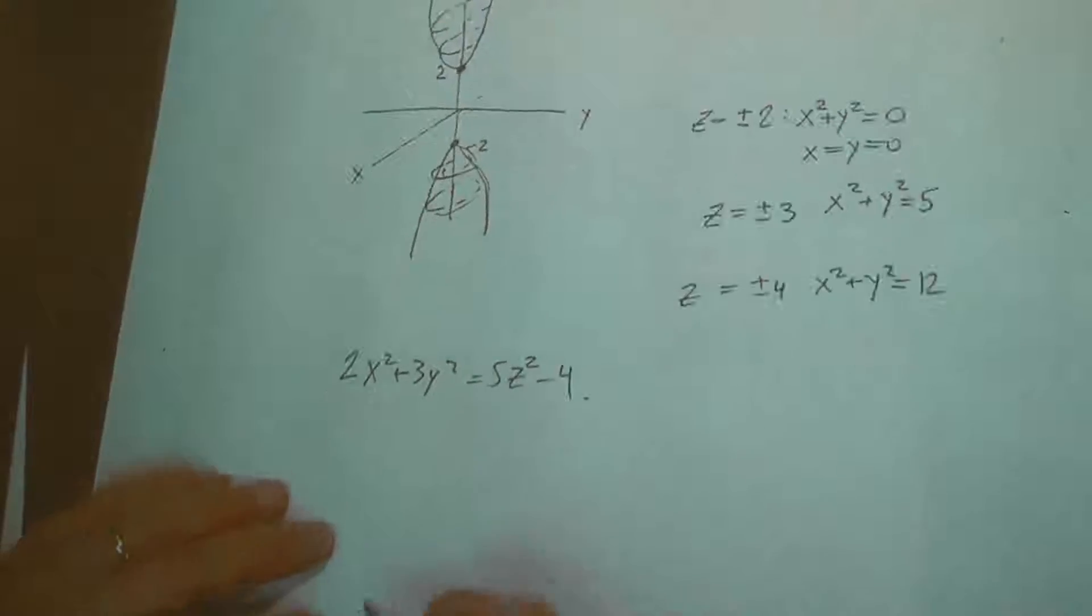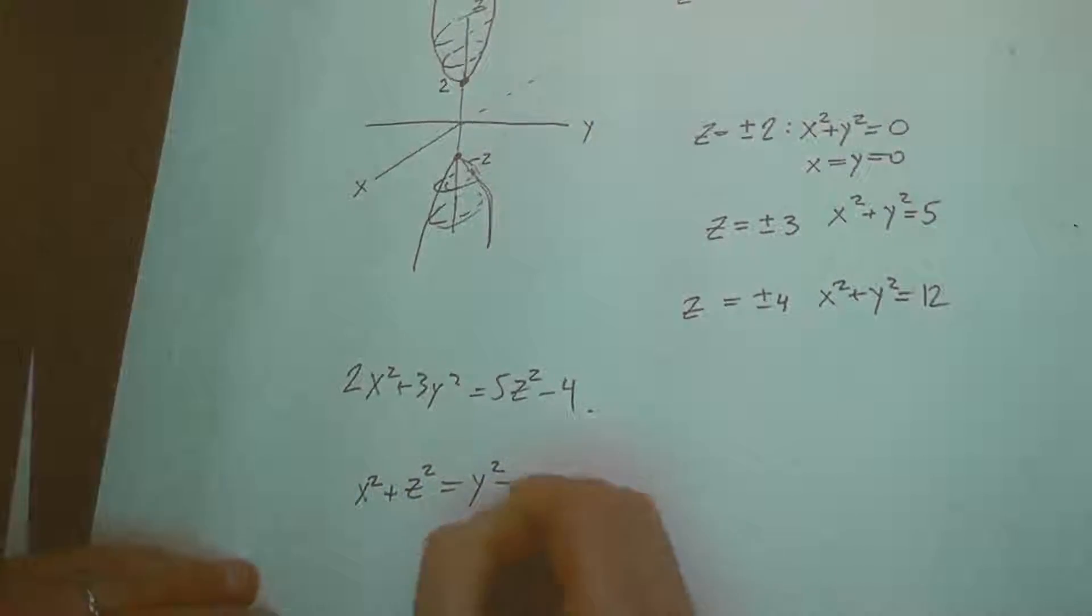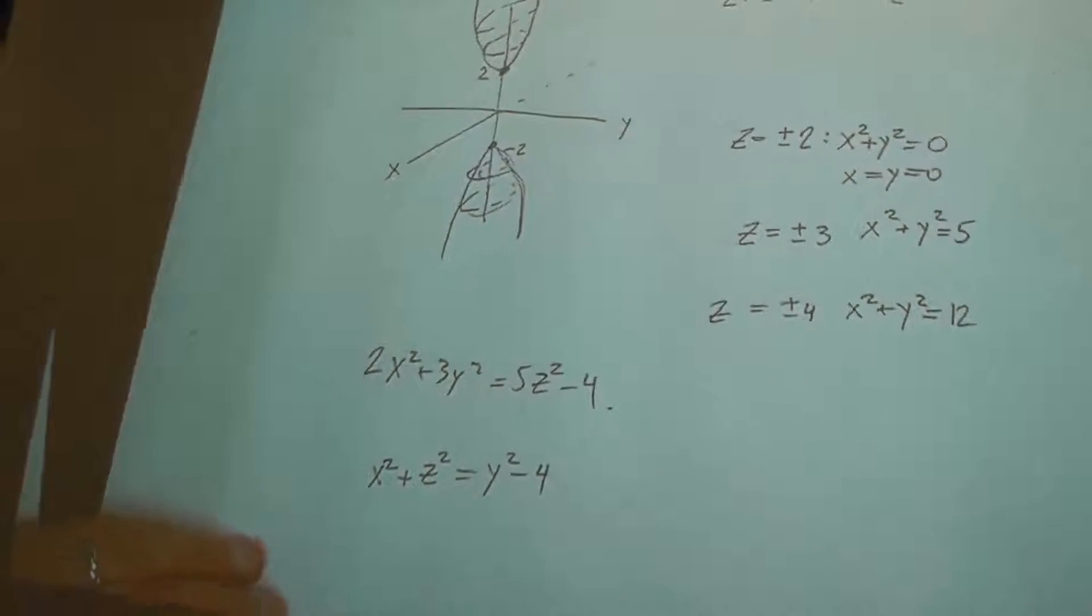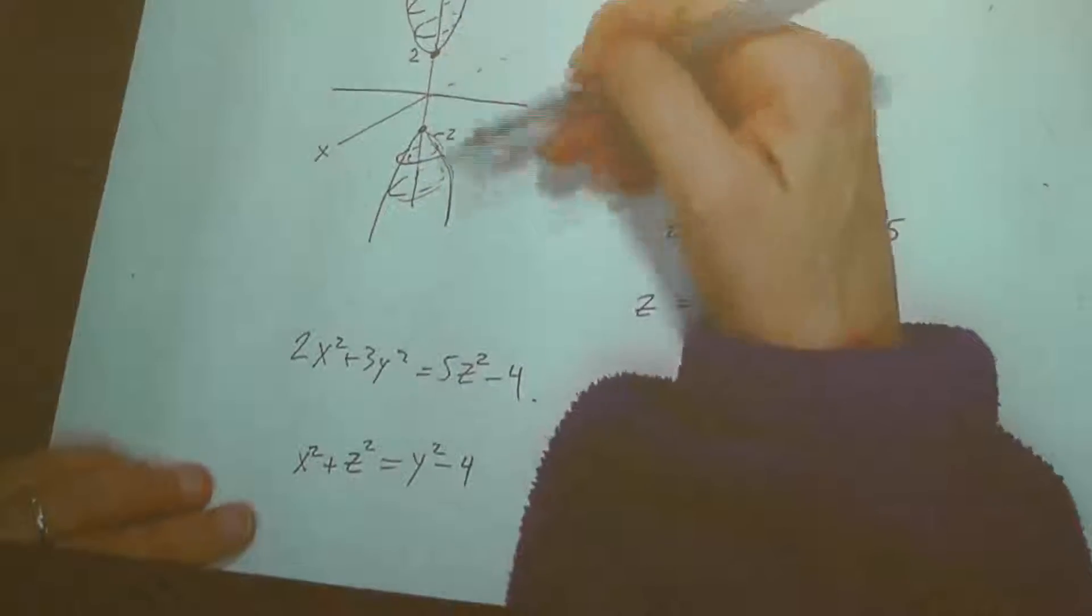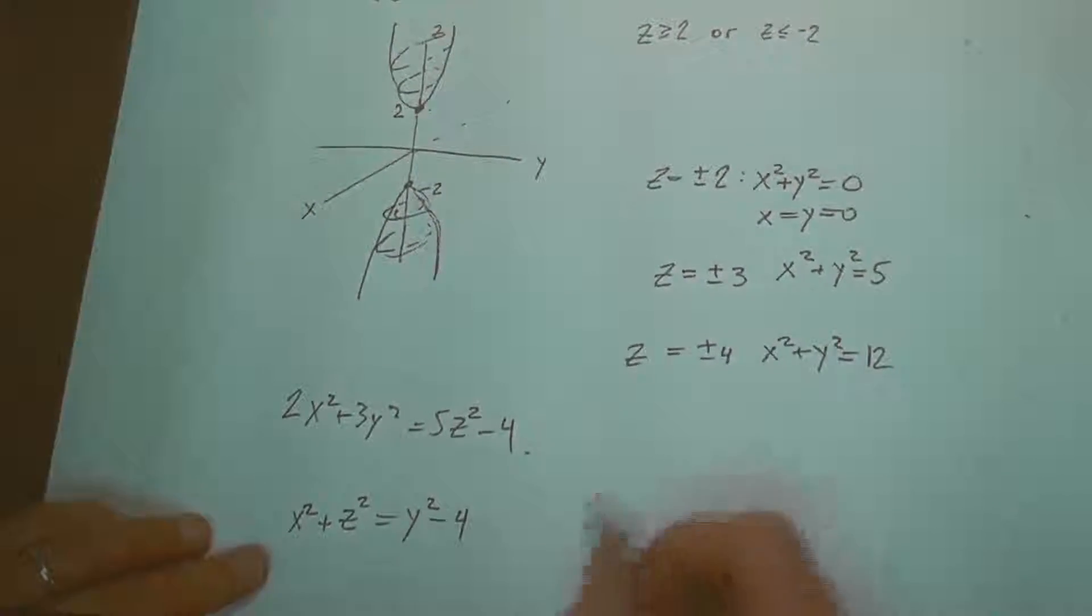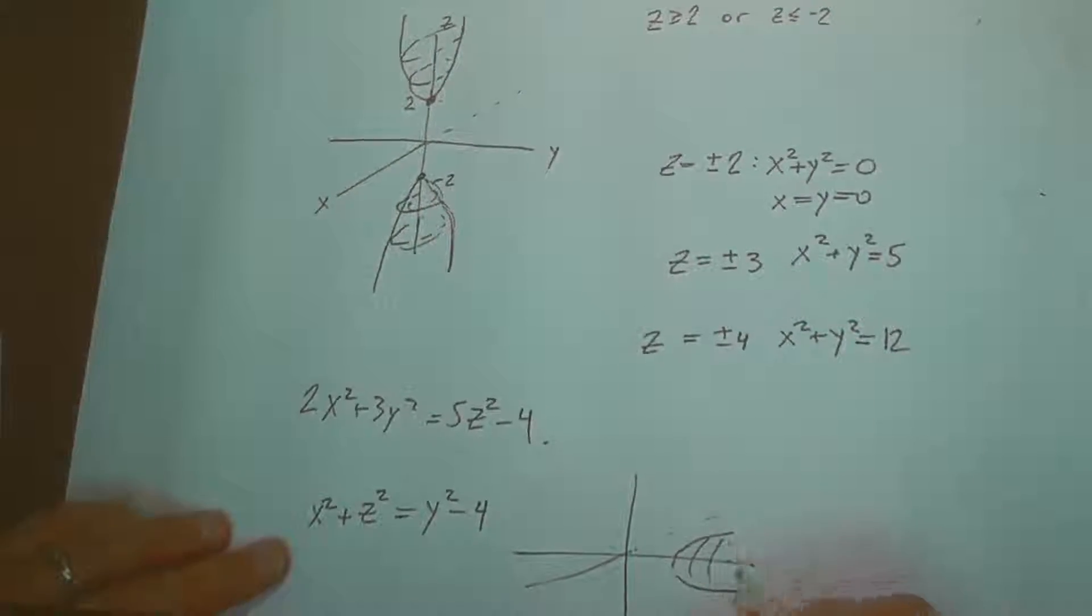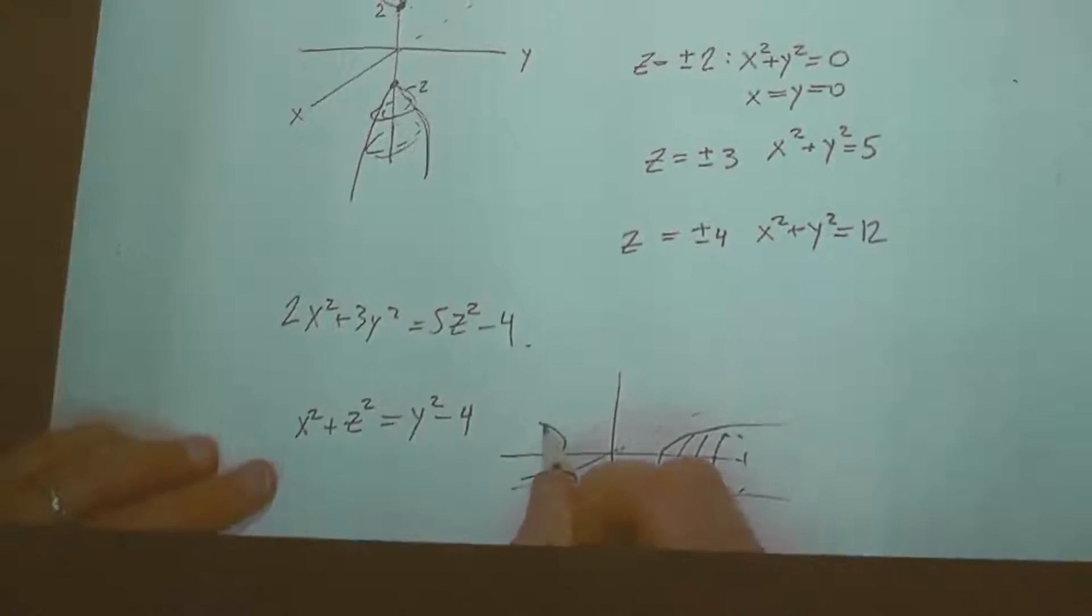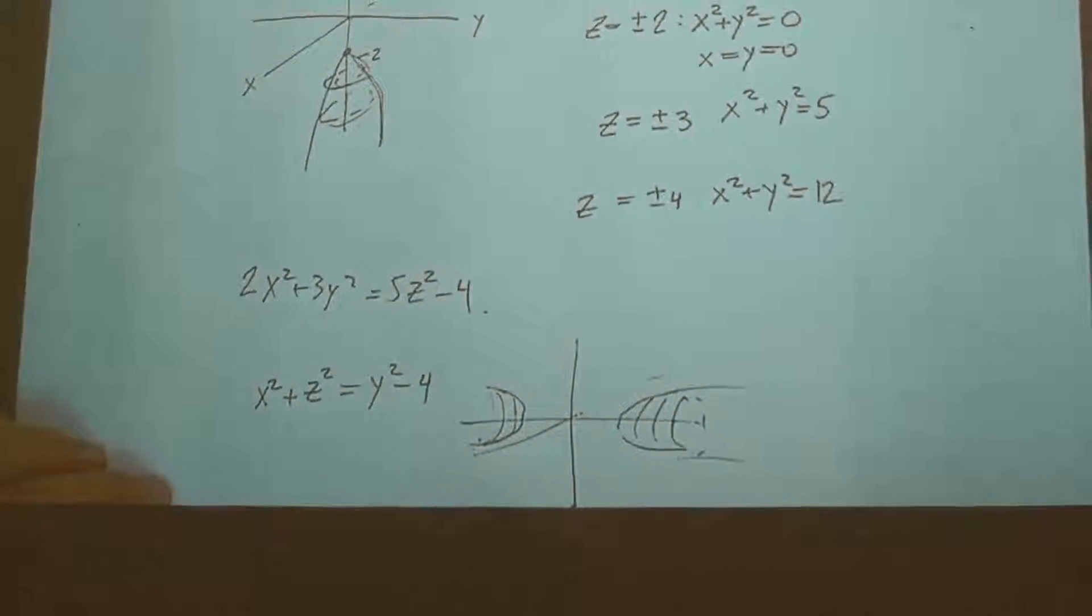And if I had x squared plus z squared equals y squared minus four, the orientation changes. Instead of spreading along z, this would be spread along y. So you see how to generate out different orientations, algebraically.